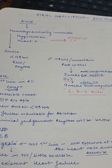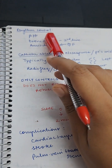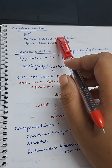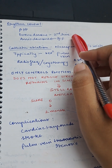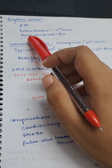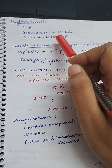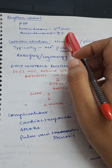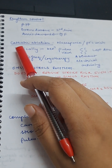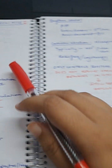For rhythm control, you use beta-blockers as first line. Dronedarone is the second line. Amiodarone is preferred in patients with co-existing heart failure. Note that dronedarone is contraindicated in coexistent heart failure.